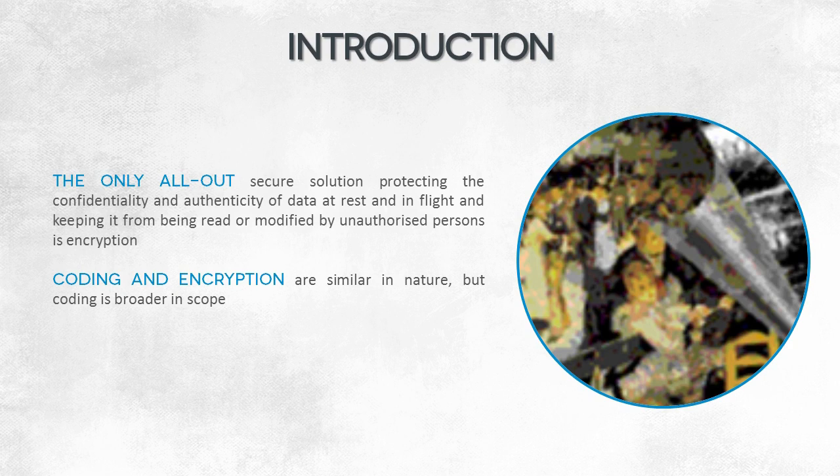As regards data confidentiality, steganography is a peculiar subtype of coding. Steganography is a method for hiding information in such a way that only a person who knows where to search is able to find it. The image is blurred because it's multi-layered. The first layer contains an image, but the internal layer has completely different data. The internet is brimming with tools to hide information, for example, in image files.